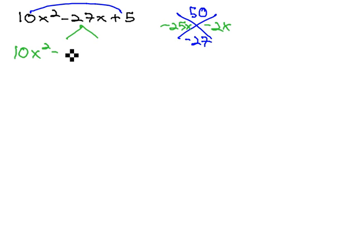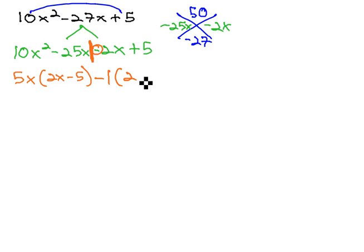We now have 10x² minus 25x minus 2x plus 5. Splitting after the second term, the GCF on the left is 5x, leaving behind 2x minus 5. On the right side, using the sign, we have negative 1 for a GCF, leaving behind 2x minus 5.